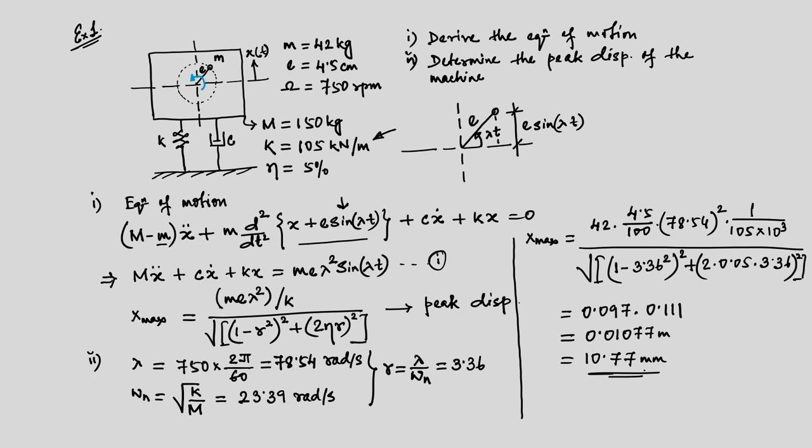The peak deformation amplitude is 10.77 millimeters. This shows how to solve problems involving rotational unbalance, using the developed theory to find the structural response. When designing the structure, this peak response is the main factor against which we design, ensuring it can withstand this level of deformation.